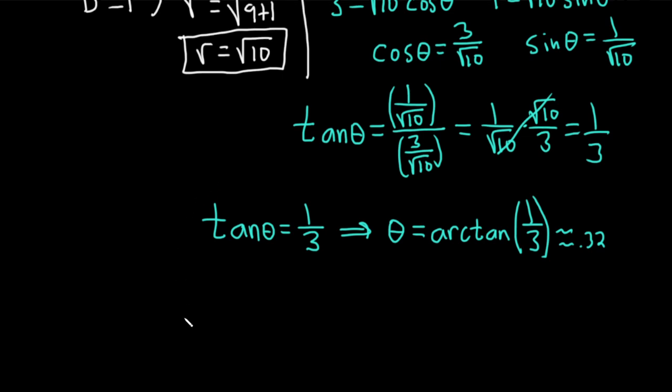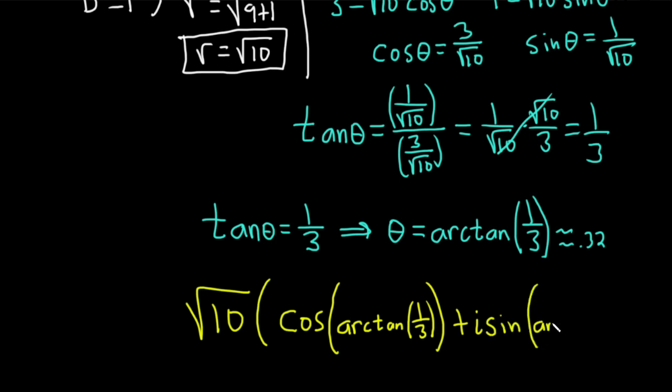So the final answer is going to be square root of 10 parentheses cosine of the arctan of 1/3 plus i sine times the arctan of 1/3, and then you want to close that parentheses again, right? So because that's the outer parentheses, and that would be the polar form.